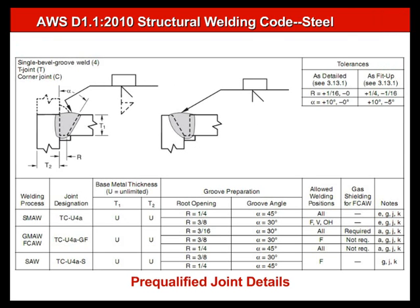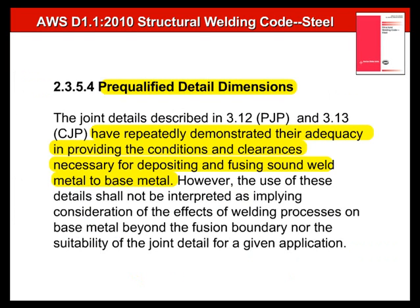I assume everyone is familiar with the so-called pre-qualified joint details. You find these in D1.1 and also in your steel manual. Far too often engineers assume that if pre-qualified joint details are employed, there is no obligation on their part to evaluate the suitability of those joints. An even more dangerous assumption is that all pre-qualified joint details are somehow foolproof and suitable for every single application. This is not the case.